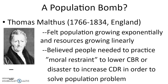Malthus felt that population was growing exponentially — meaning if you have two people, they double to four, four to eight, eight to sixteen, sixteen to thirty-two, and so on — while resources, especially food, were growing linearly, meaning you add one unit at a time: one, two, three, four, five. He believed a population bomb crisis was coming, and that people needed to practice moral restraint to lower the crude birth rate, or a disaster would increase the crude death rate.